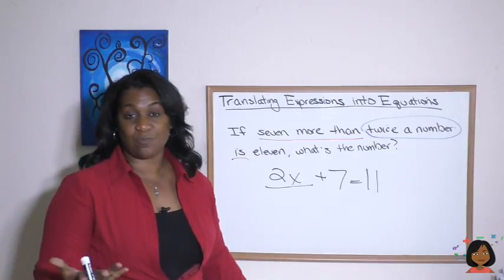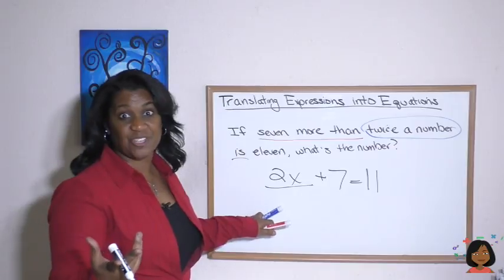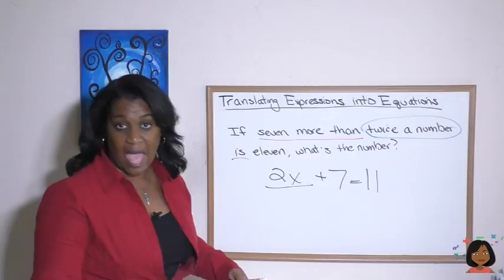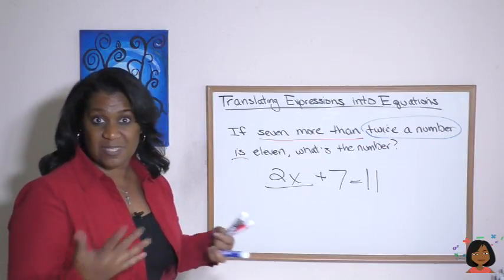That's just an algebraic equation. At this point, we can solve. The first thing we have to do, the intention here is to get X by itself. And to do that, we need to get rid of the seven first. How do we get rid of the seven? We're going to add the opposite of seven, which is a negative seven.